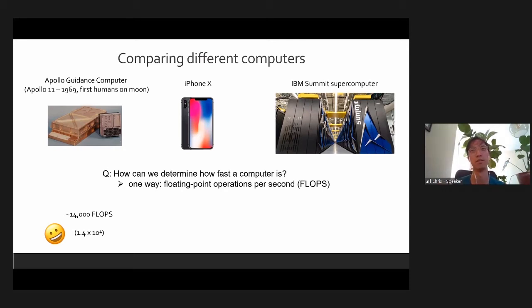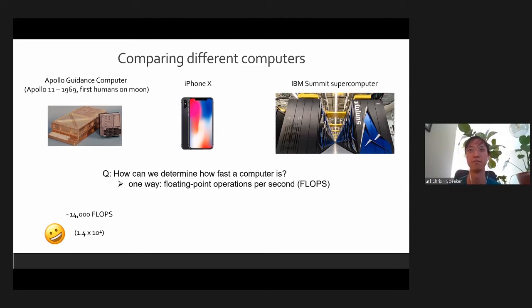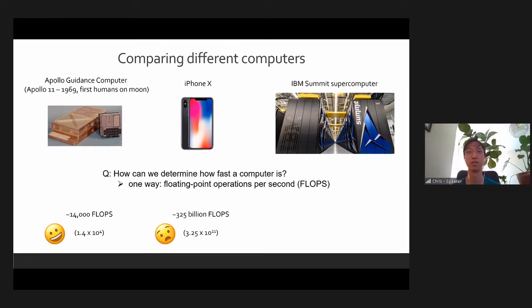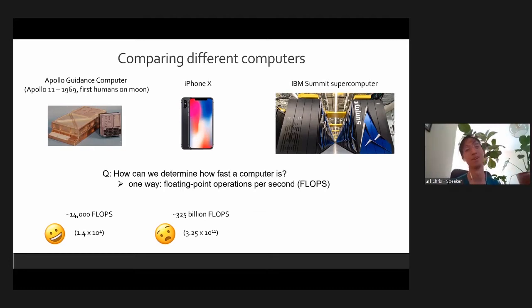How about for the iPhone 10? Guesses of 200K, 1,000, 100,000, 500K, 100K, 50,000K — the numbers are getting a little bit bigger. A million? It turns out it's really, really good — it's 325 billion. This is a huge jump from 50 years ago. In scientific notation, that's 10 to the 11. It's really, really fast. This is how your iPhone can handle doing all the things it does when you're multitasking.